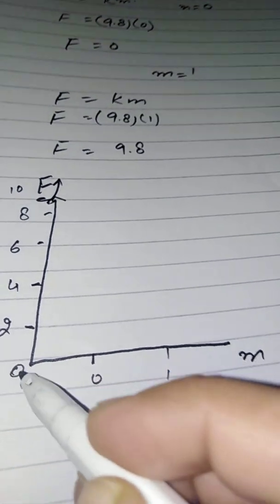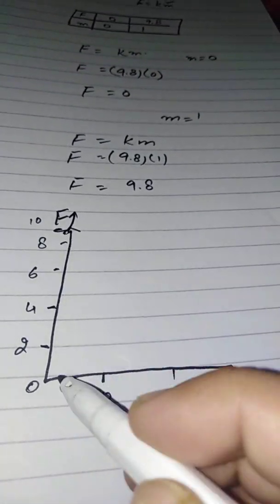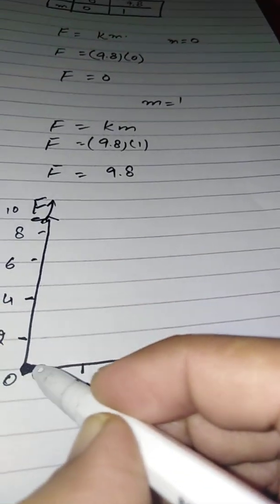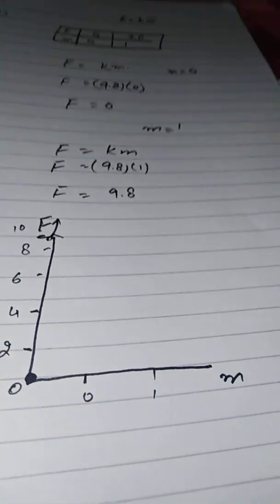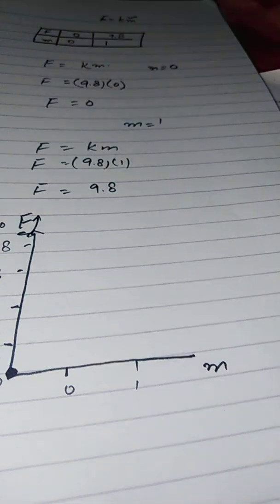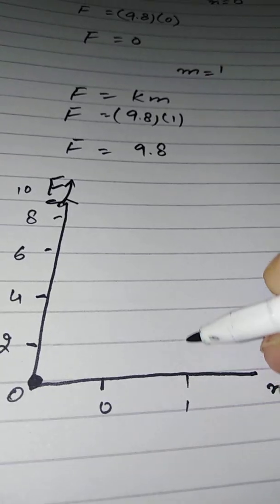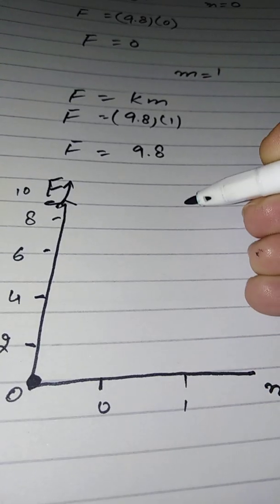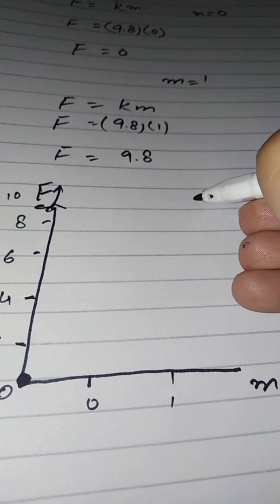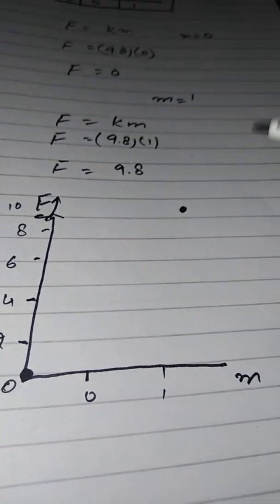M is 0 and F is 0, so put the first dot at the origin. The other value is M equals 1 and F equals 9.8. Extend up to 9.8 on the y-axis — it will be near 10 — so place the second dot there and join the two dots.